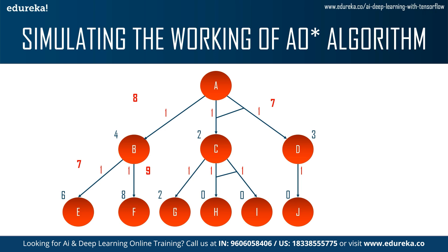We already know the cost from A to C and D is 7. Next, the cost from C to G is 2 + 1 = 3. The cost from C to H and I is 0 + 0 + 1 + 1 = 2. Since H and I have a heuristic of 0, there is no further traversal cost, and these nodes are considered solved. We can also solve D to J: 0 + 1 = 1, replacing the previous value of 3.